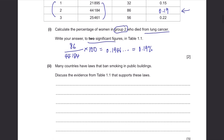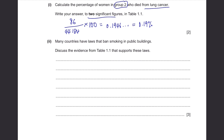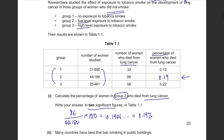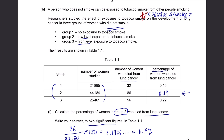Many countries have laws that ban smoking in public buildings. Discuss the evidence from Table 1.1 that supports these laws. Through this experiment, we have learned that through passive smoking, people can also get lung cancer and die from it. So the government decided to ban smoking in public to reduce exposure to tobacco smoke and lower the risk of dying from lung cancer.